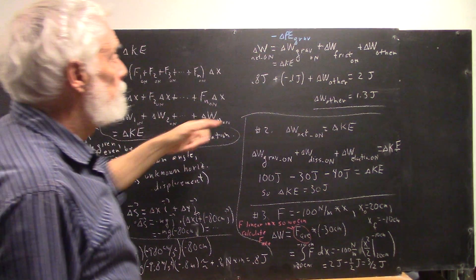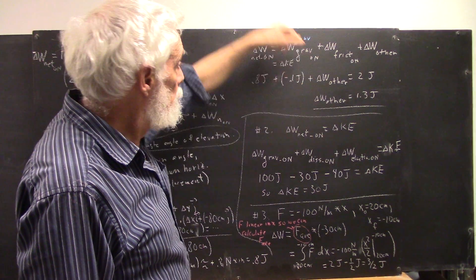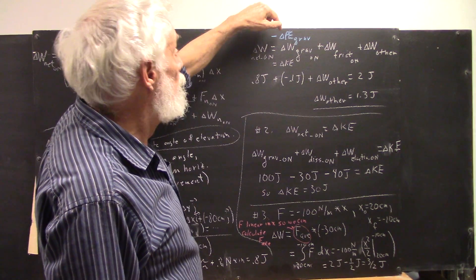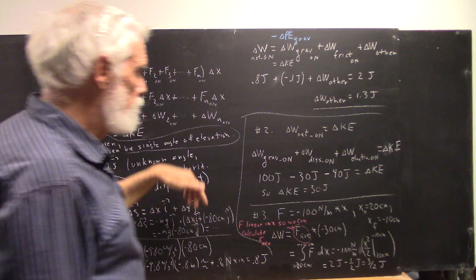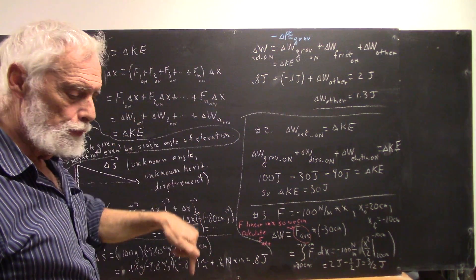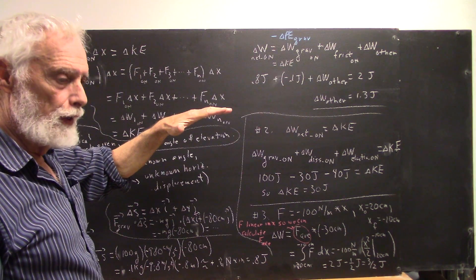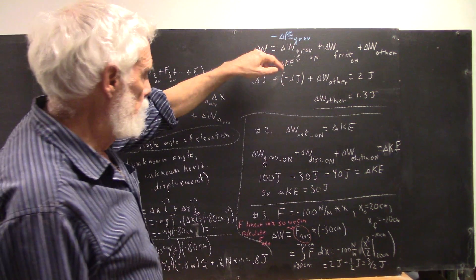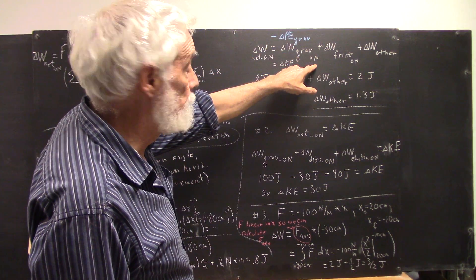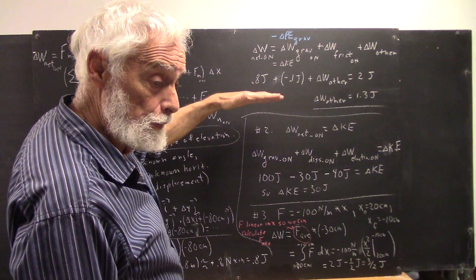The work done on the system by the gravitational force is going to be equal to the change in gravitational potential energy. If gravitational force does 0.8 joules of work on the object, its gravitational potential energy then decreases by 0.8 joules. So the work done by gravity on the system is 0.8 joules, and the change in potential energy is negative 0.8 joules.